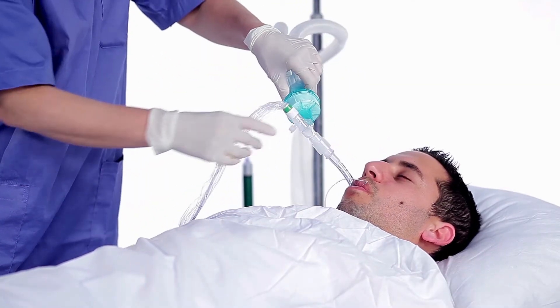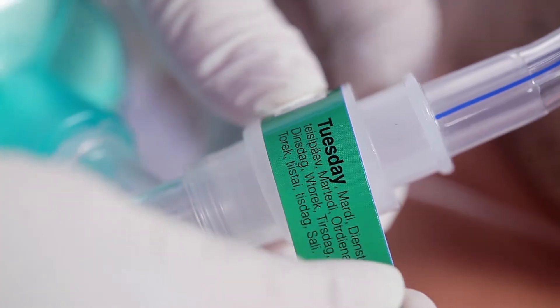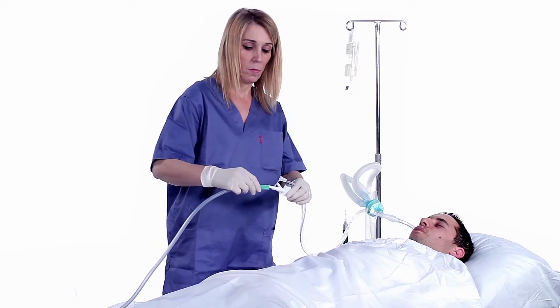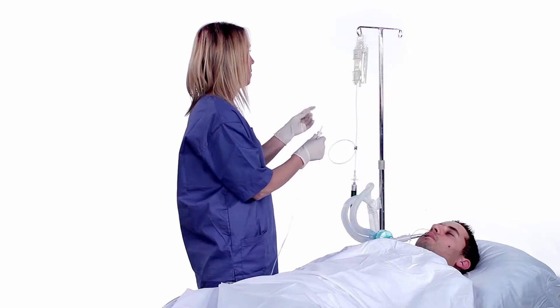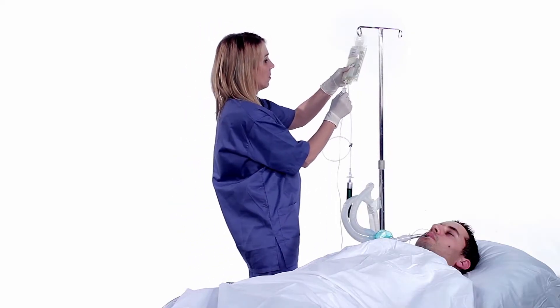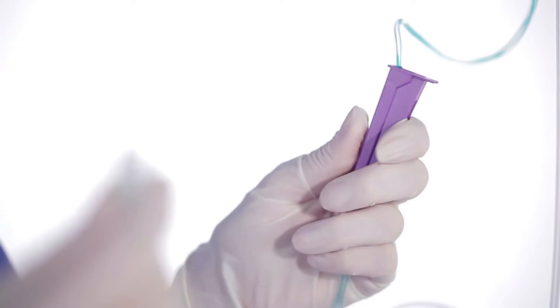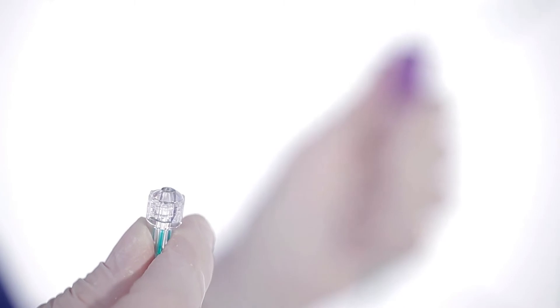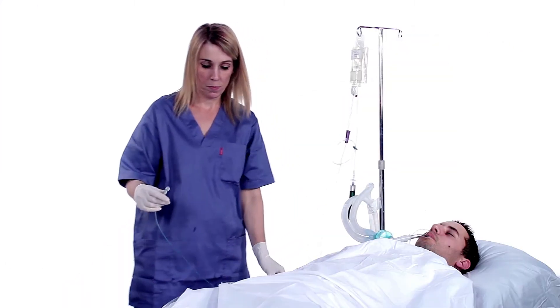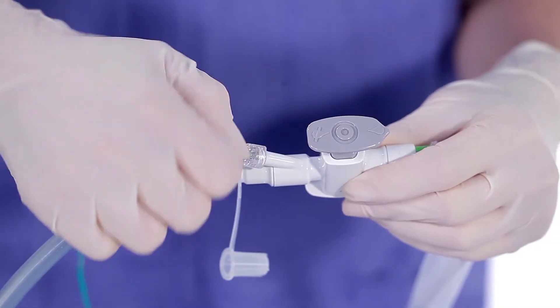Connect the Airway Medics between the endotracheal tube and ventilator circuit. Attach the date sticker and connect the vacuum source. Connect the supplied extension line via the spike to the saline bag in the pressure bag.